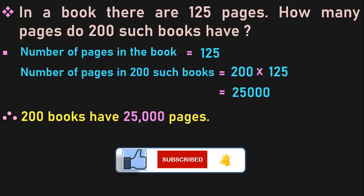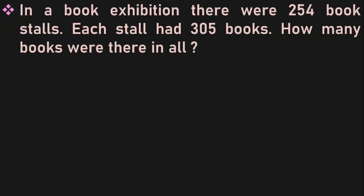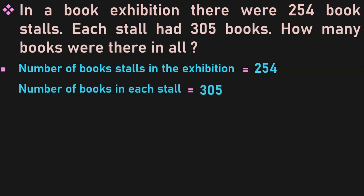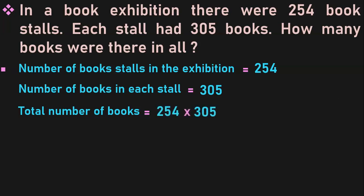Let us go on to the next sum. In a book exhibition, there were 254 book stalls. Each stall had 305 books. How many books were there in all? Number of book stalls is equal to 254. Number of books in each stall is equal to 305. Each book stall has 305 books, so we have to find how many books are in 254 stalls — multiply 254 by 305.